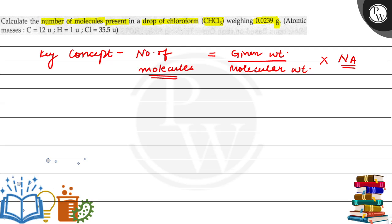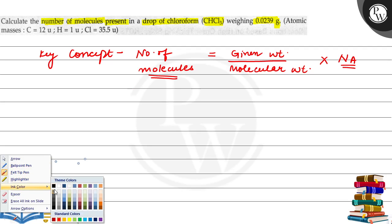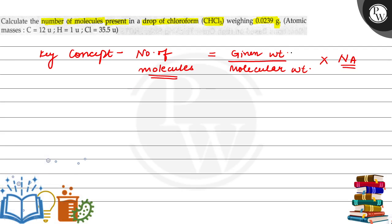By using this concept we can find out the number of molecules. To use this formula we first have to know the given weight and molecular weight. Avogadro's number is a constant value that is equals to 6.022 into 10 to the power 23.